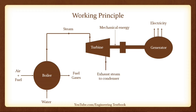Exhaust to Condenser. The exhaust steam leaving the steam turbine is passed into the condenser, where it is cooled and condensed to give water as condensate, with the help of a cooling medium such as cold water, air, or a combination of both.